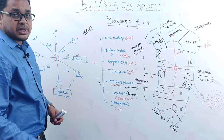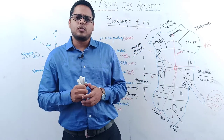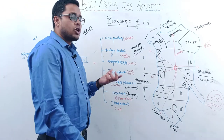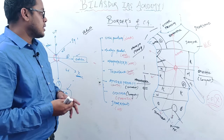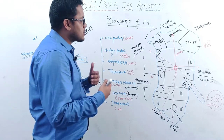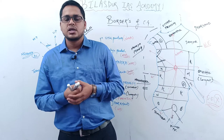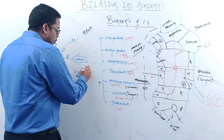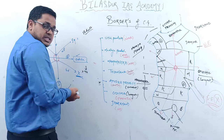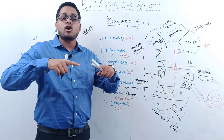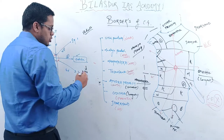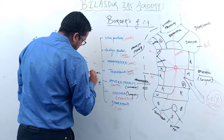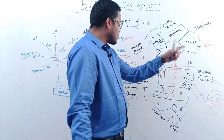Now talking about why we learn about political borders. First, it gives the territorial extent — we know which area is under Chhattisgarh government control, defining the territorial boundary of the state. This territorial extent helps in deploying government schemes, identifying beneficiaries, deploying manpower, and defining Lok Sabha and Rajya Sabha seats.